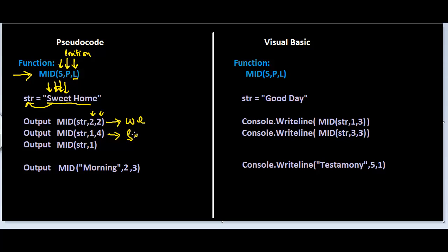Starting from position one — which is 'S' — and extracting the next four characters gives us S, W, E, and E, so this is what is going to be output. In this example, no length has been specified — only the string variable and the position are provided. When no length is mentioned, from the specified position we pick the entire remaining string, so this would output the entire string.